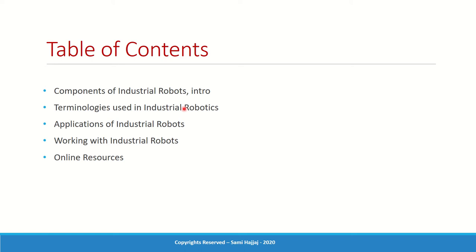When we mention industrial robots in this course, we generally mean manipulators. Even though mobile robots could be used in industrial applications, we are not talking about those here, because 99% of industrial robots are manipulators. We'll also cover applications and general uses of industrial robots in manufacturing, working with industrial robots and how to make the robot do the tasks we want, and some online resources useful for this course and for robotics in general.